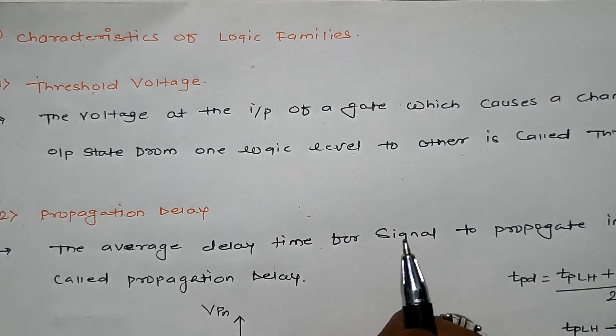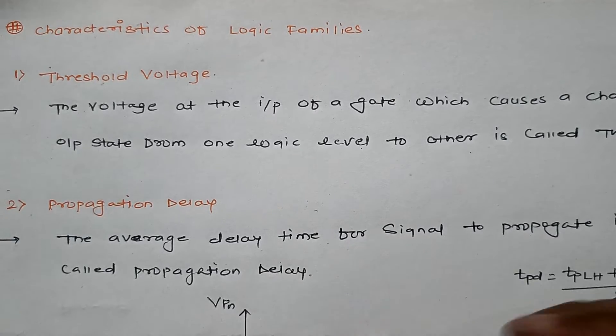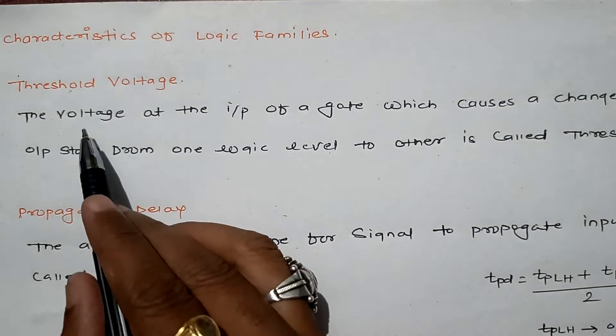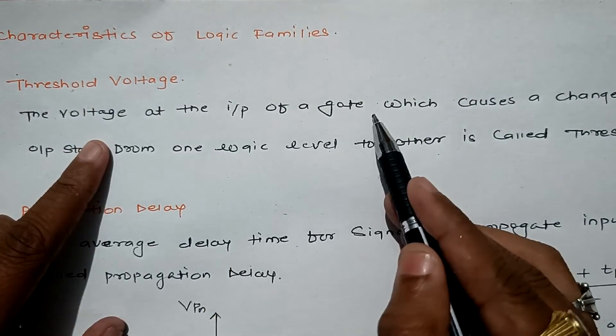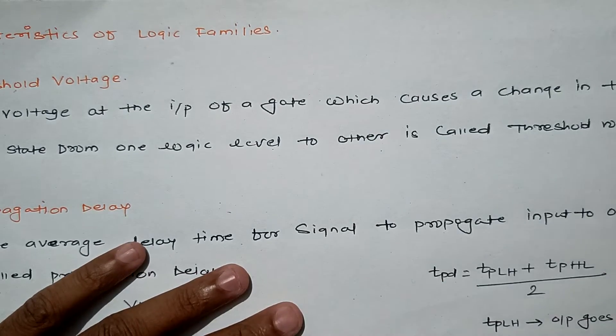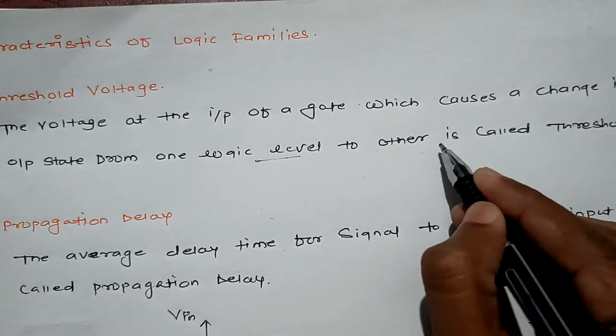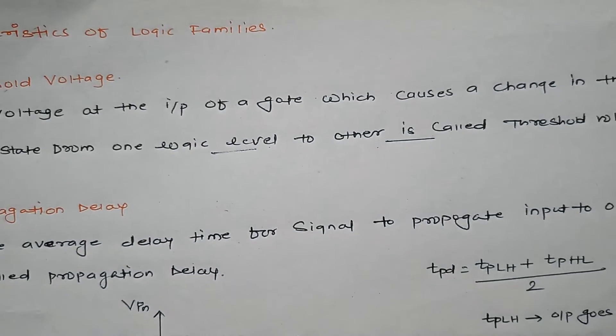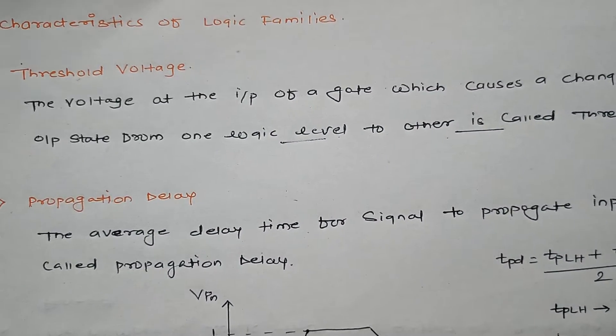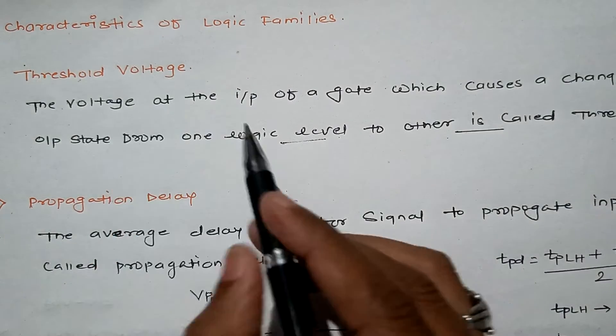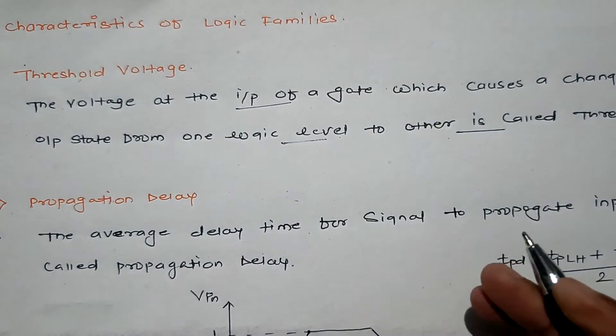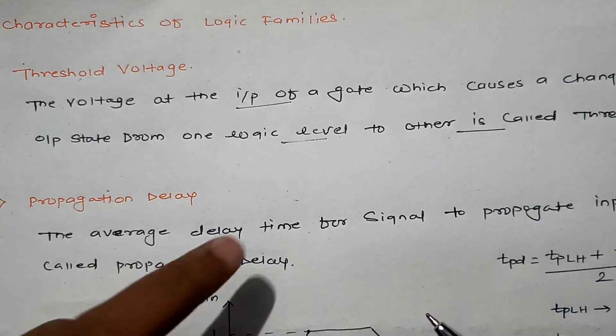The first one is threshold voltage. How can you define it? The voltage at the input of a gate which causes change in the output state from one logic level to another logic level is called threshold voltage.